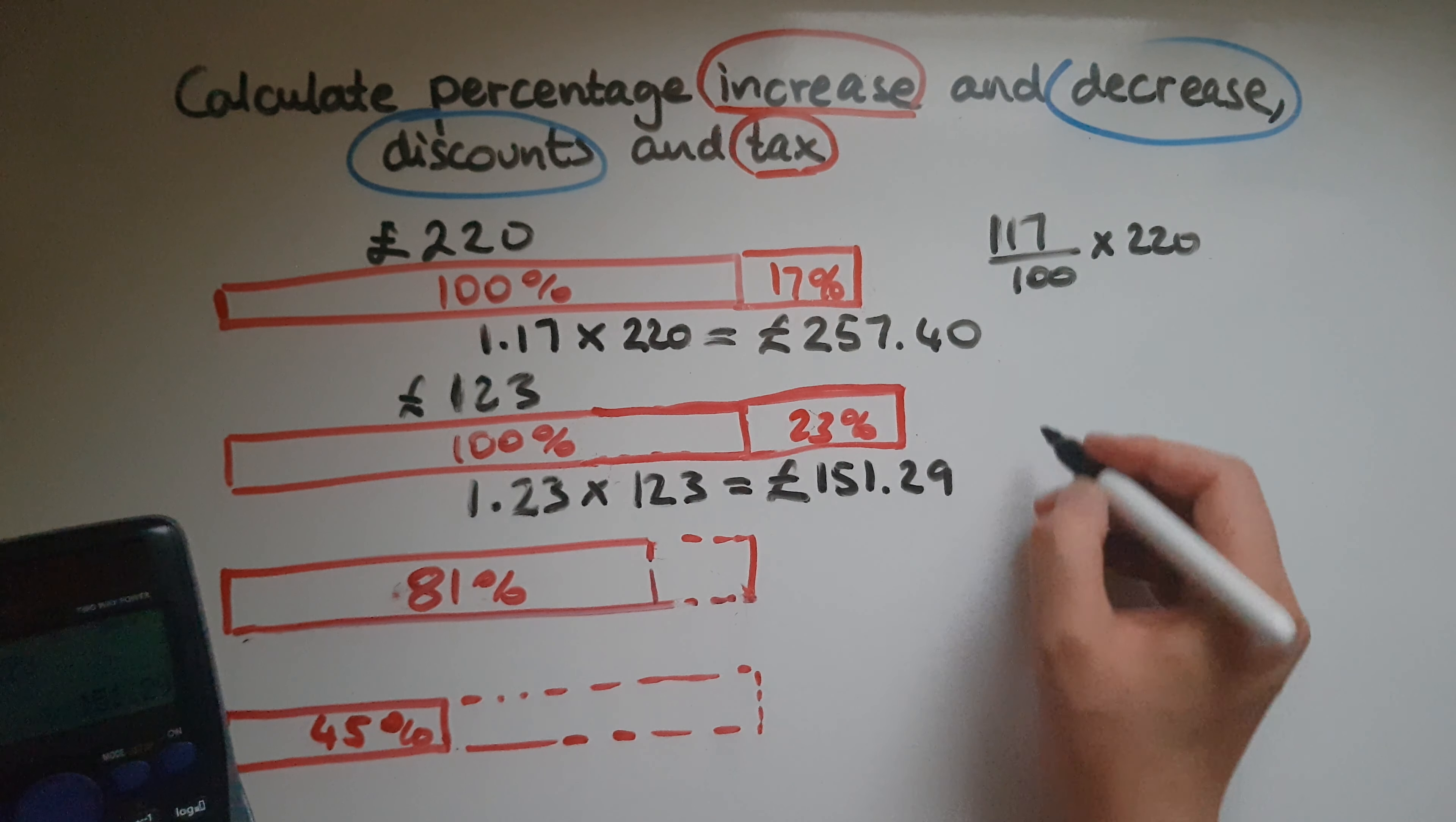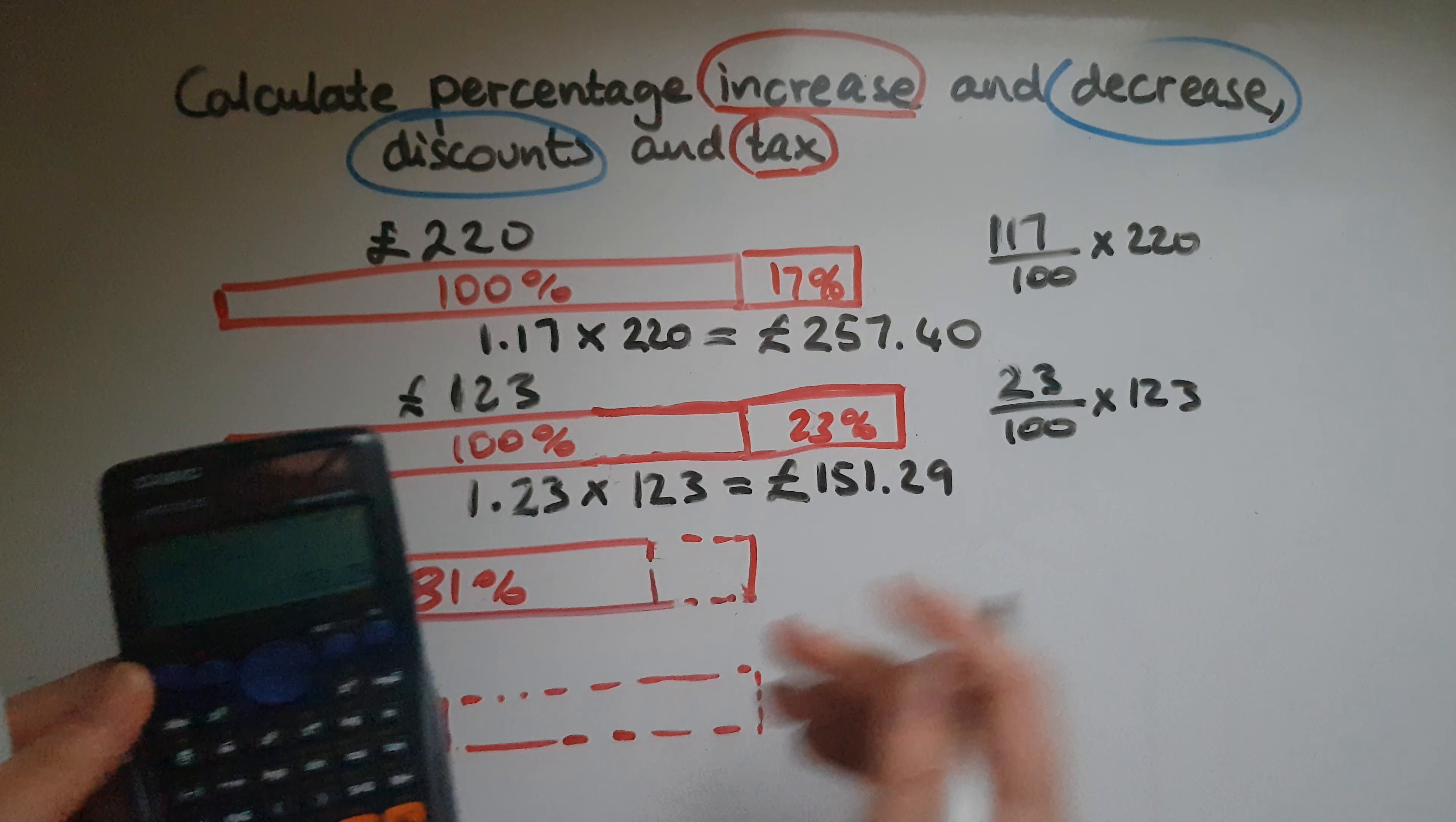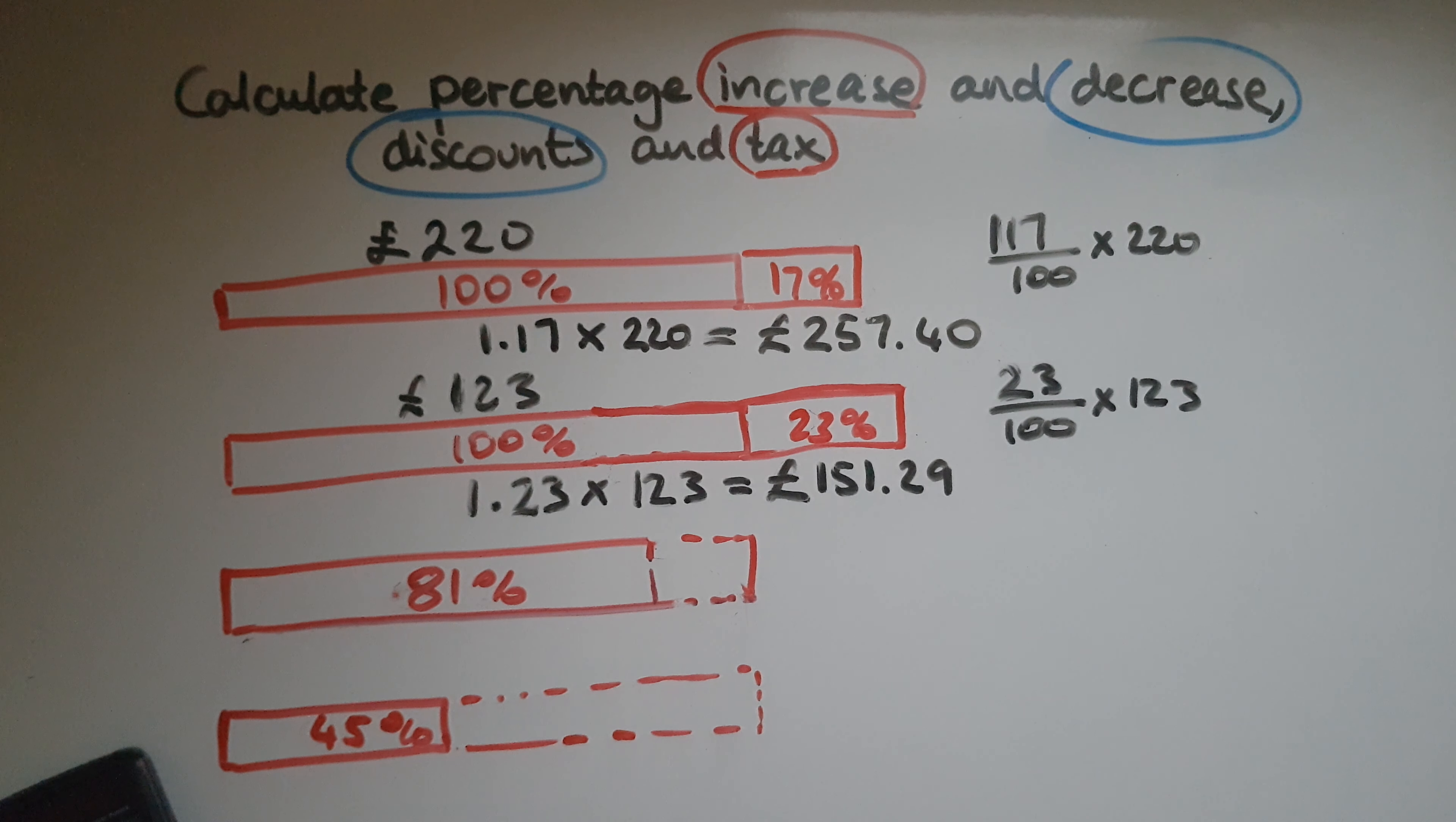So that is the new price or the price with the tax included. What we could have done as well is get 23% of 123 and then add it on top. So 23 out of 100 times 123, and then that amount can be added on top of 123, which was the 100%. Either way, it will give you the same answer. So as you can see, increase and tax, you're talking about something being added on top of the 100%, on top of the original amount.